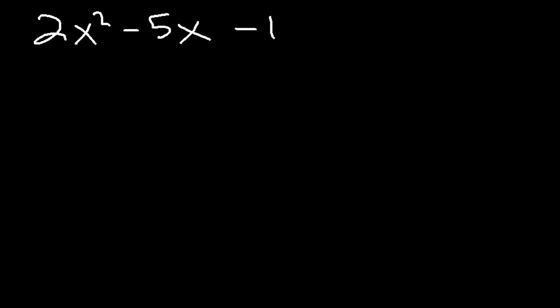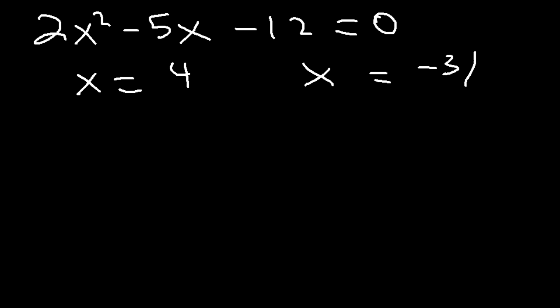Now let's go back to our original equation, which was 2x squared minus 5x minus 12. You can also solve this equation by factoring. However, sometimes some equations might be difficult to factor. If you have an equation that's factorable but very difficult to factor, you can use the quadratic formula. We know that x is equal to 4 and x is equal to negative 3 over 2. With this information, we can reverse-factor the problem.